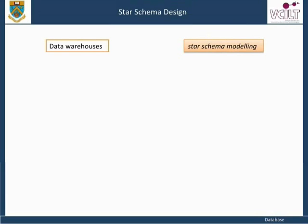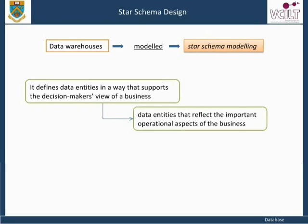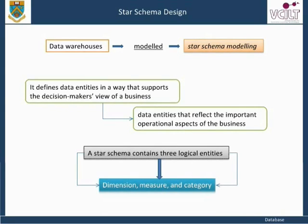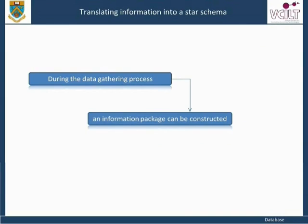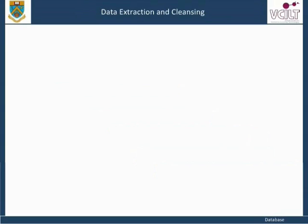Data warehouses can best be modeled using a technique known as Star Schema Modeling. It defines data entities in a way that supports the decision-maker's view of a business as well as data entities that reflect important operational aspects. A star schema contains three logical entities: Dimension, Measure, and Category Detail. During the data gathering process, an information package can be constructed based on which a star schema is formed.